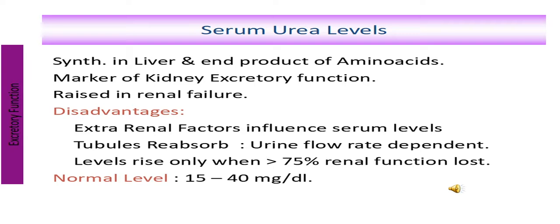Urea level increases in renal failure. Disadvantages: extra-renal factors influence serum urea level. When tubules reabsorb, urine flow is dependent and the level rises only when more than 75% of renal function is lost. Normal urea level is 15 to 40 mg per deciliter.